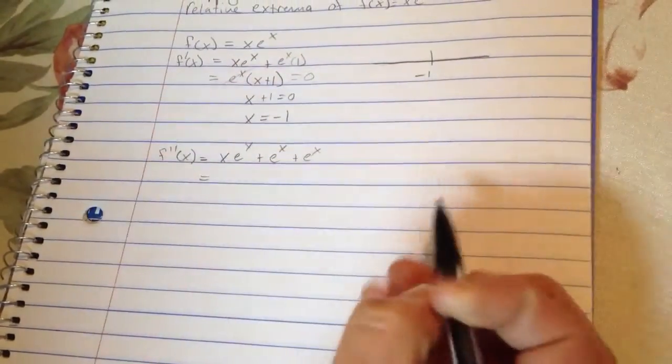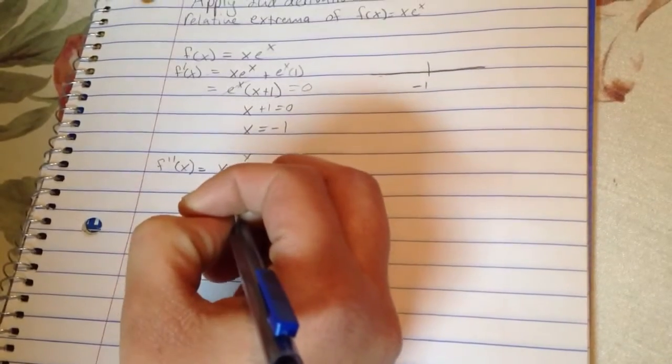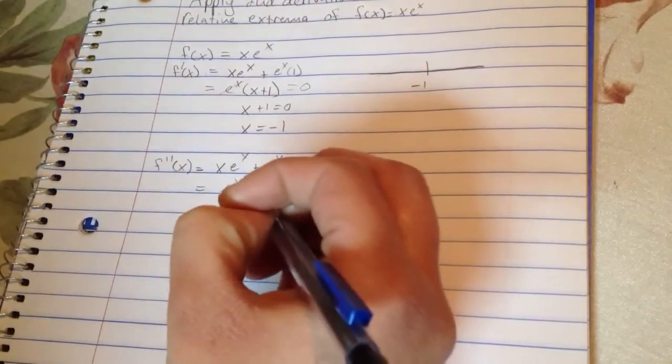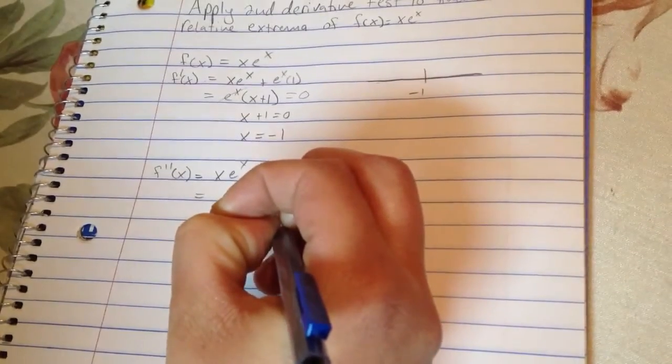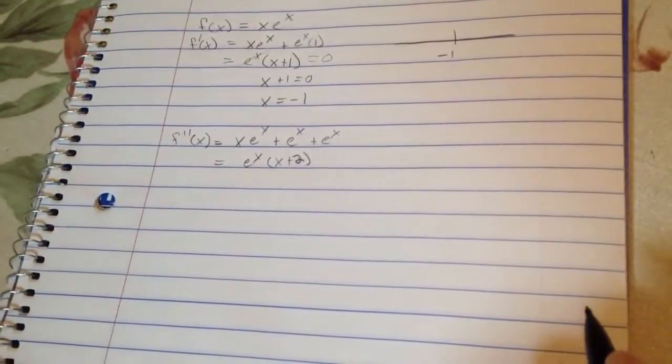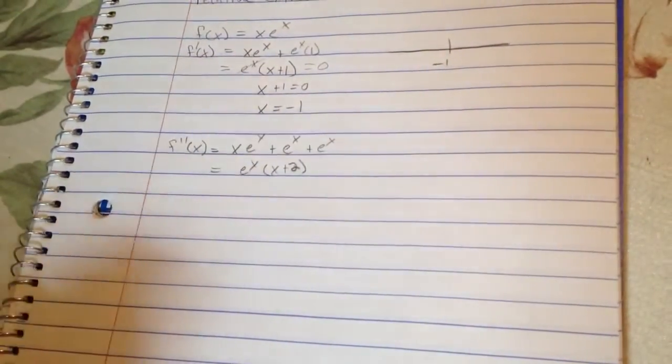So when you pull it out, you're going to have e to the x times x plus 2. Make sure that's legible there. So this is your second derivative here.